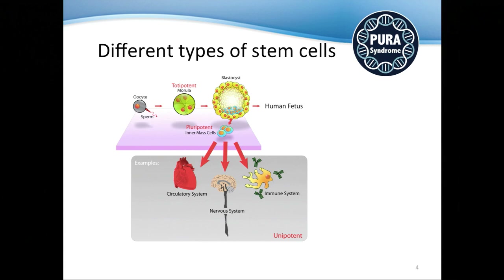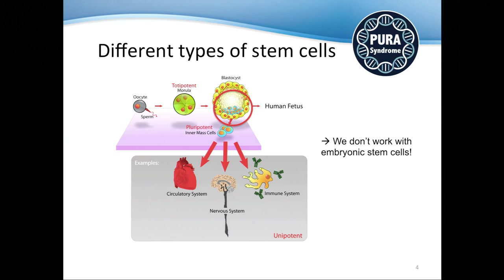These pluripotent stem cells, depicted here in blue, have the potential to generate cells for the circulatory system, the nervous system, the immune system, and all the other tissues in the human body. However, we do not work with embryonic stem cells because we cannot obtain them — that would mean disrupting a human embryo, which is morally and ethically not possible.